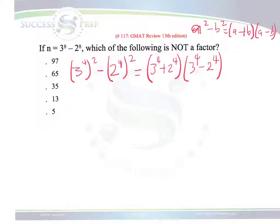We can also recognize at this point, we can go ahead and break up the 3 to the 4 minus 2 to the 4 some more, because that can be broken up as 3 to the 2 squared minus 2 to the 2 squared,